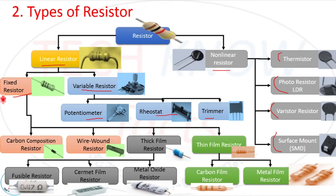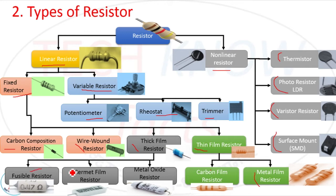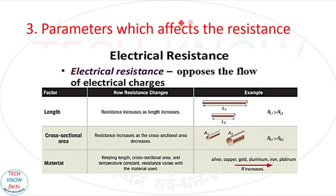Variable resistors have three basic types: potentiometer, rheostat, and trimmer. Fixed resistors have four basic types: carbon composite resistor, wire wound resistor, thick film resistor, and thin film resistor. Thin film resistors have two basic types: carbon film and metal film. Thick film resistors have three basic types: fusible resistor, ceramic film resistor, and metal oxide film.